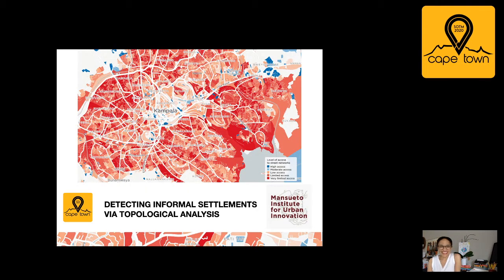Good morning and hello. I am Annie Birkus. I am a resident fellow at the Monsueto Institute for Urban Innovation at the University of Chicago. The title of my talk today is 'Detecting Informal Settlements via Topological Analysis,' and it presents the work of our Million Neighbourhoods Initiative research team here at the Monsueto Institute.